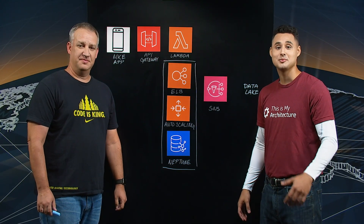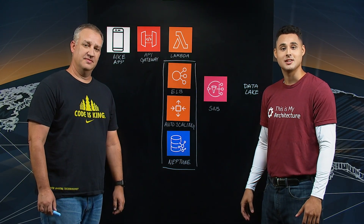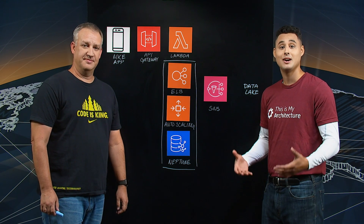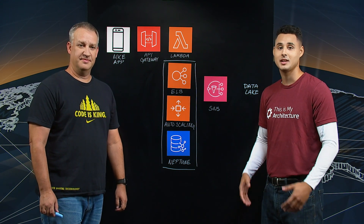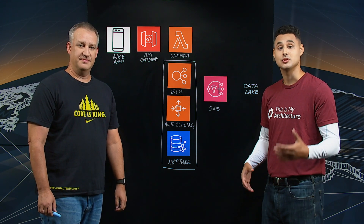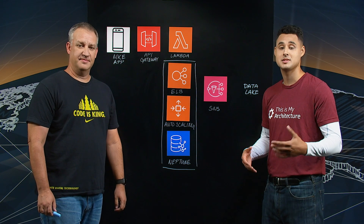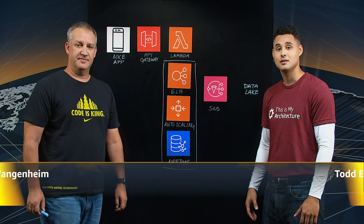Hello and welcome to another episode of This is My Architecture. Today we'll be talking about how Nike powers a number of its applications using a social graph that they built with Amazon Neptune. I'm joined by Mark from Nike. Welcome. Thanks for having me.